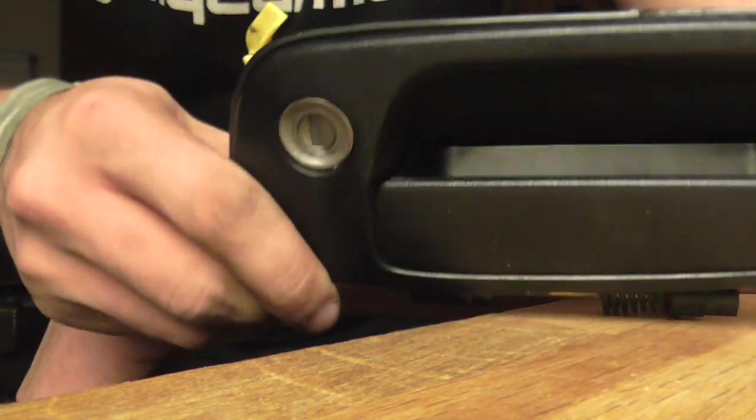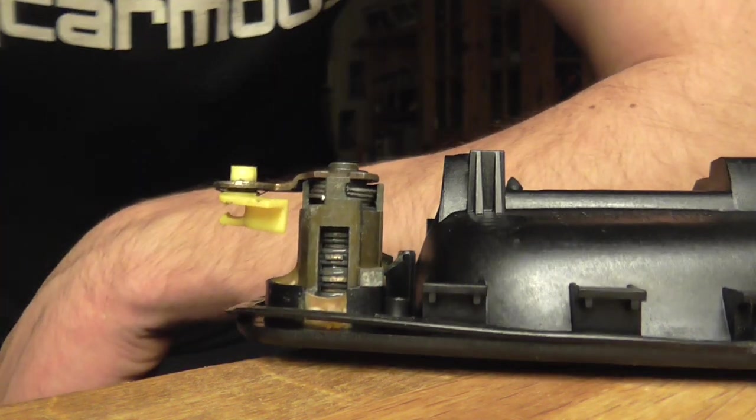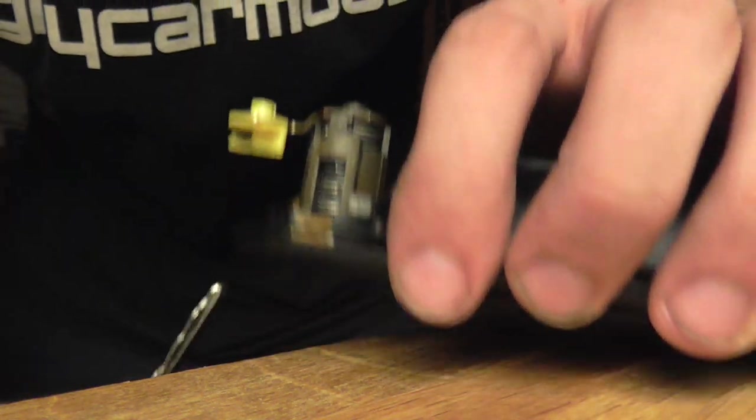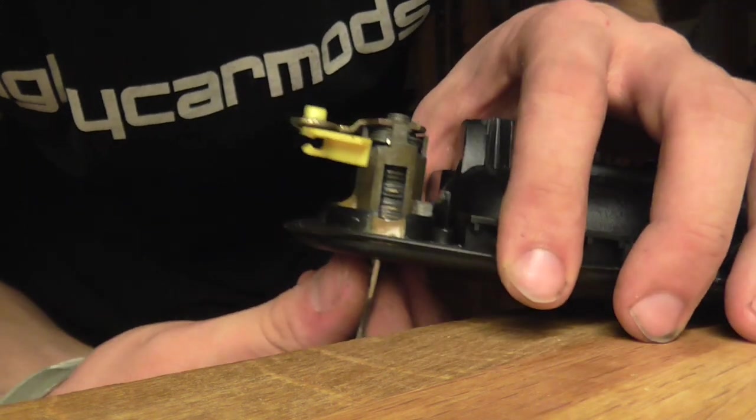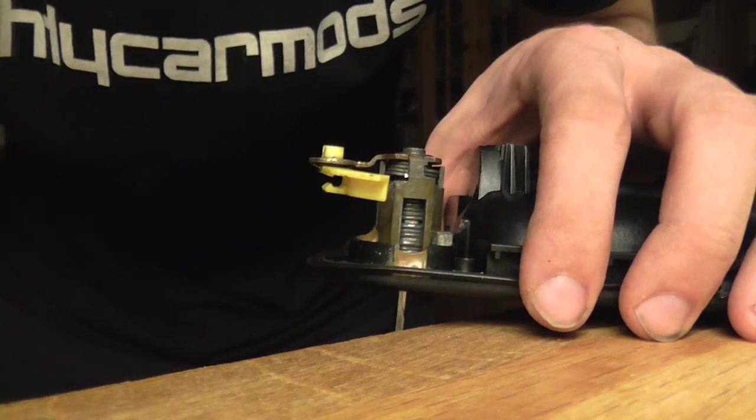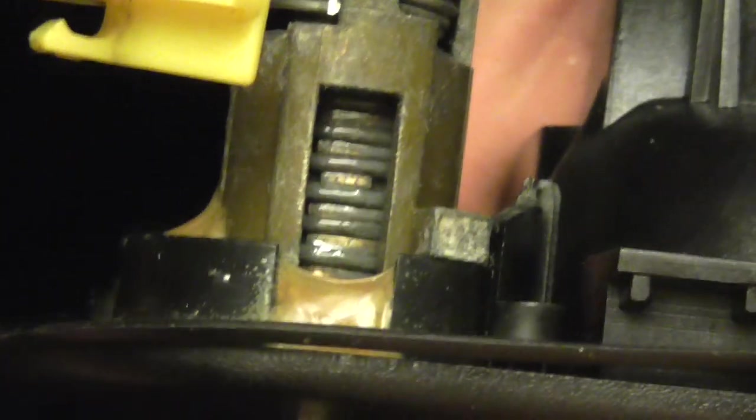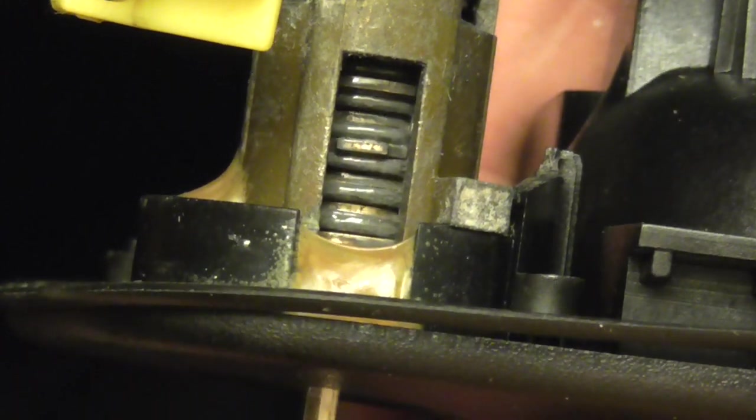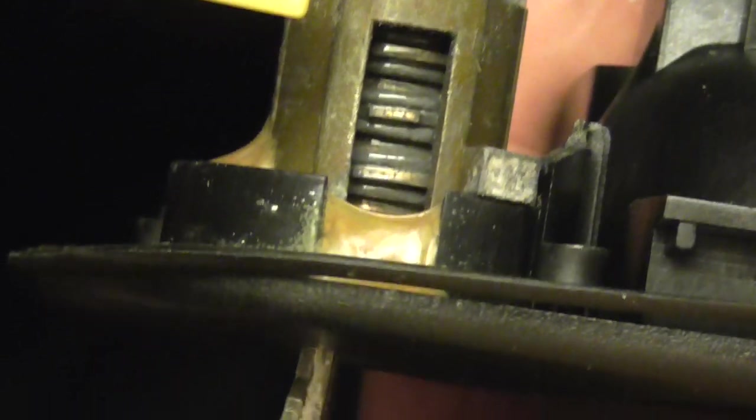So there is the lock assembly itself. This is pretty much how it works when you put in the key to the barrel here. You can see those things move, those teeth. Let me just zoom in here so you can see those. If you pull out the key you can see how they move.